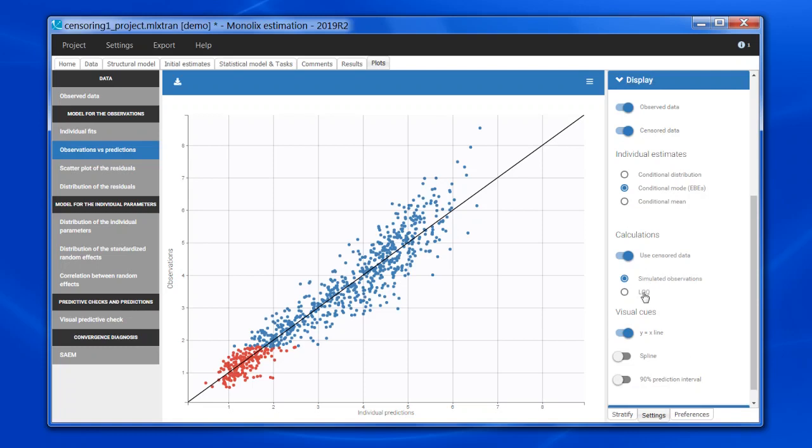One option would be to use the LOQ. This can be done by choosing this option here. As one can expect, this will really bias the plot and is not recommended. A second option is to just disable the BLQ. The drawback of this is that we lose all the information contained in the BLQ.